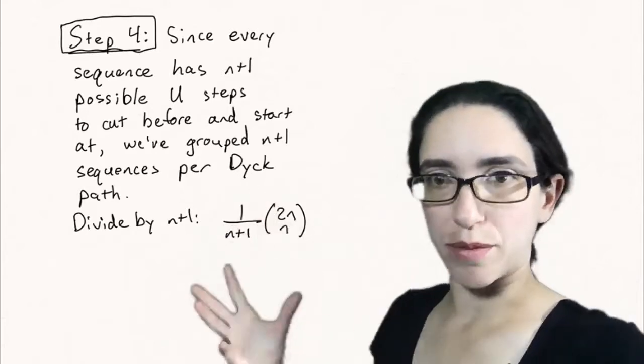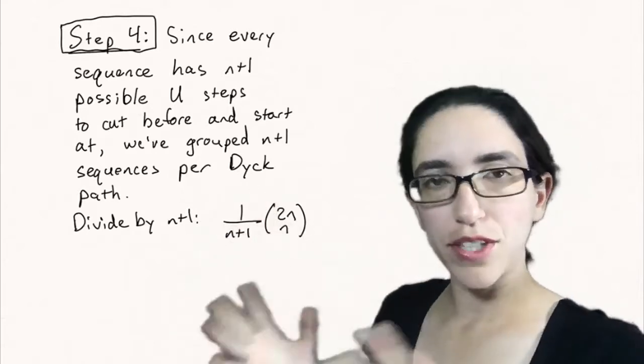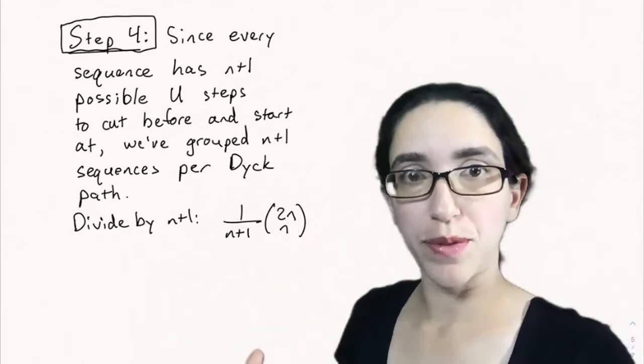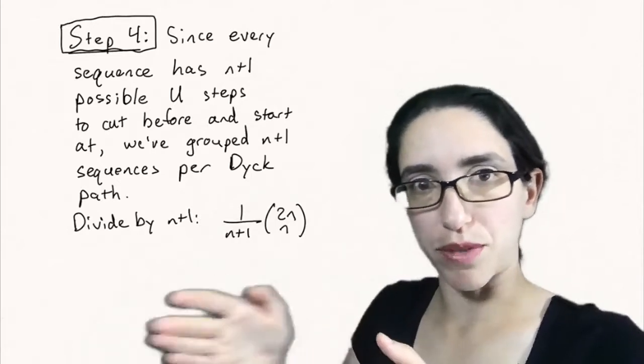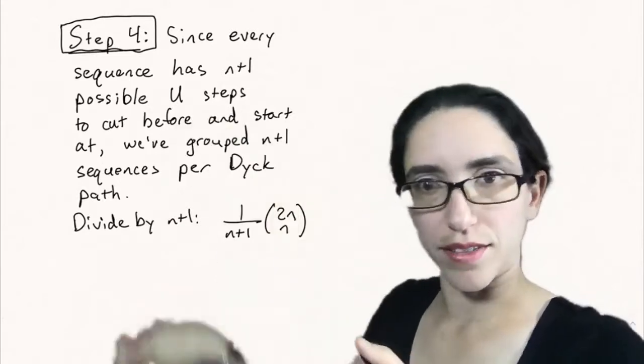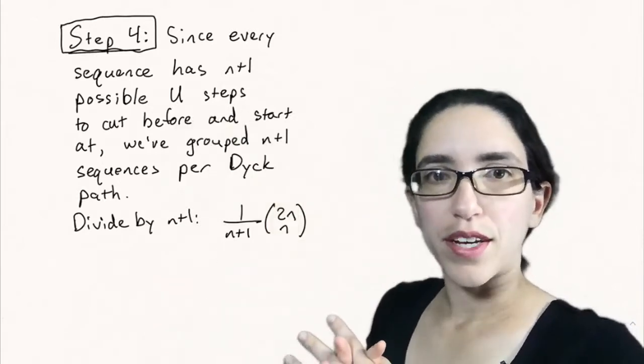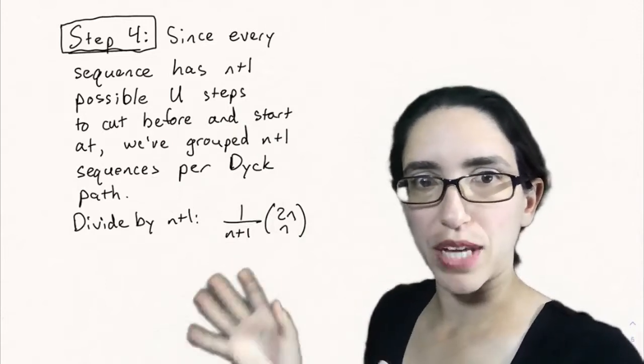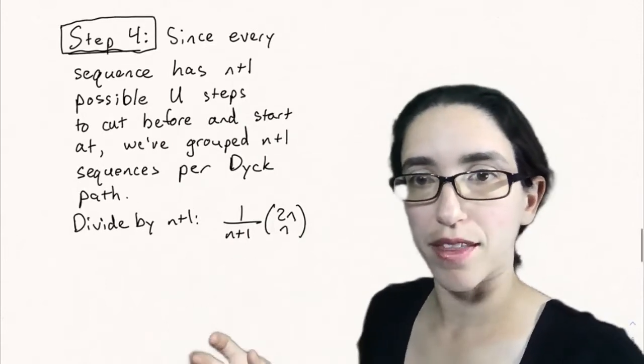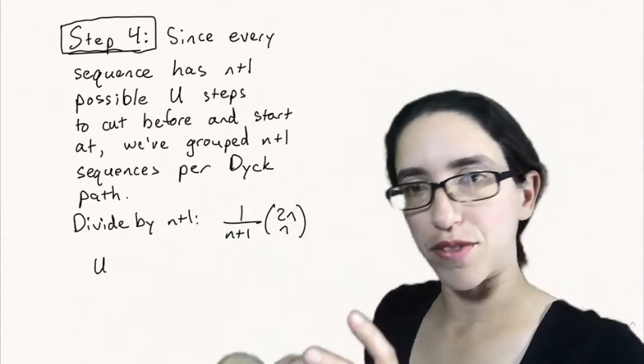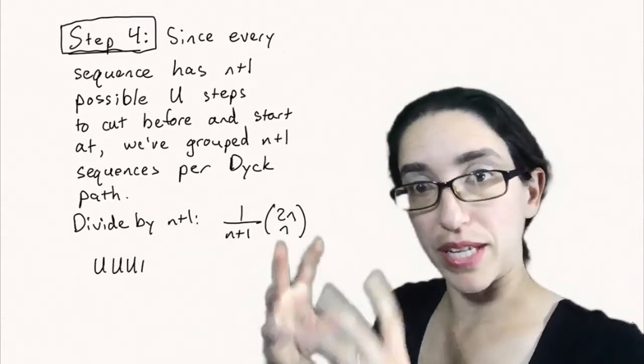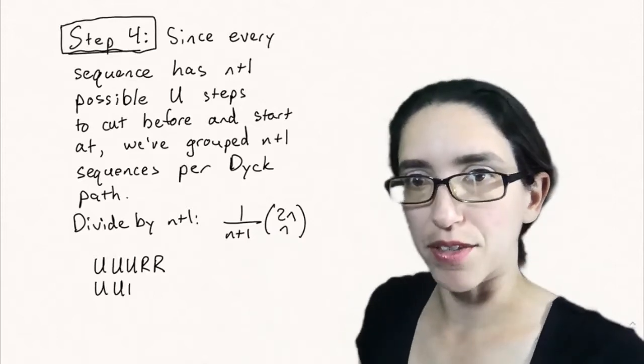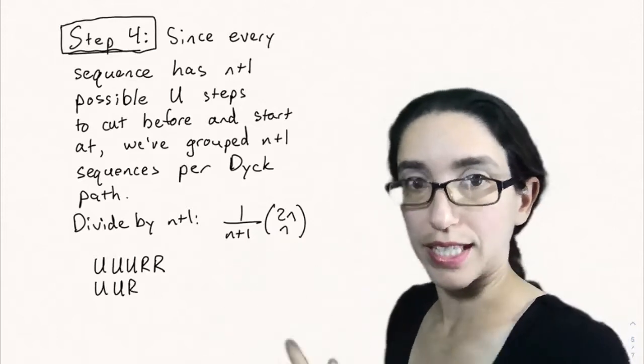Step four is to actually make those groupings. Since every sequence that we're considering has n plus 1 up steps and n plus 1 possible up steps to cut at and shift around, then we can consider all of those as the same. We've grouped n plus 1 sequences per Dyck path. You're considering all the shifts starting at any of the U's to be in the same group.